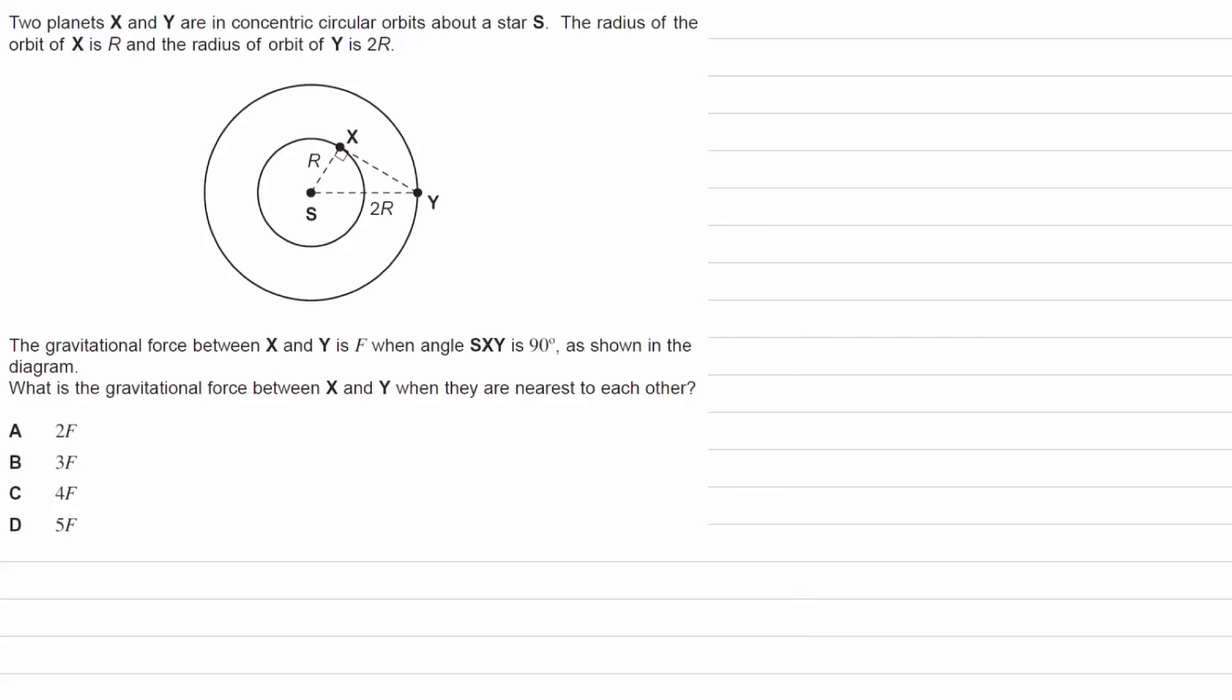Two planets, X and Y, are in concentric circular orbits about a star. The radius of orbit of X is R, and the radius of orbit of Y is 2R.